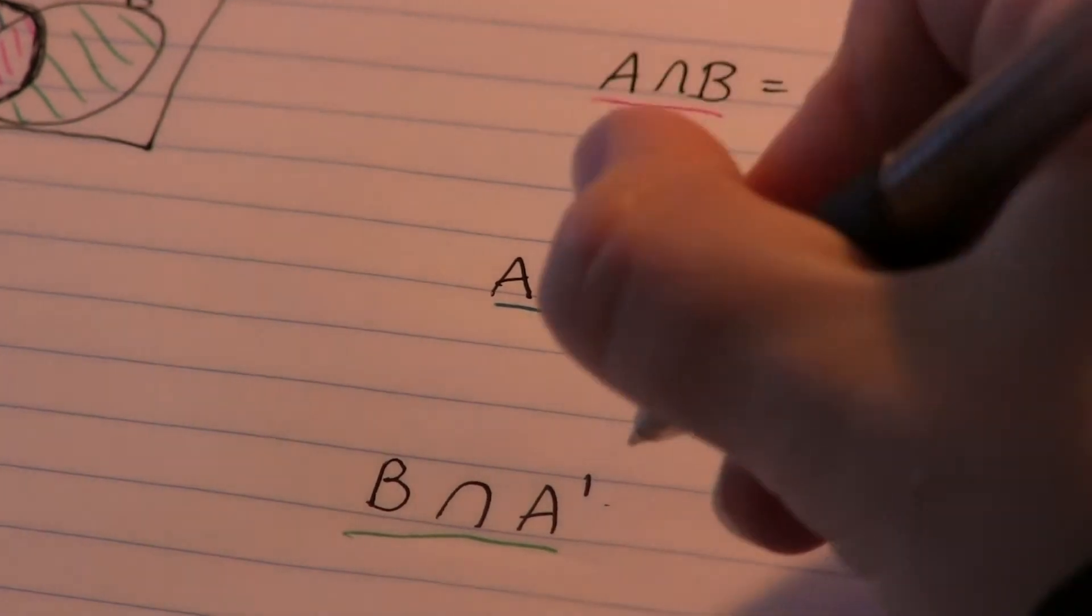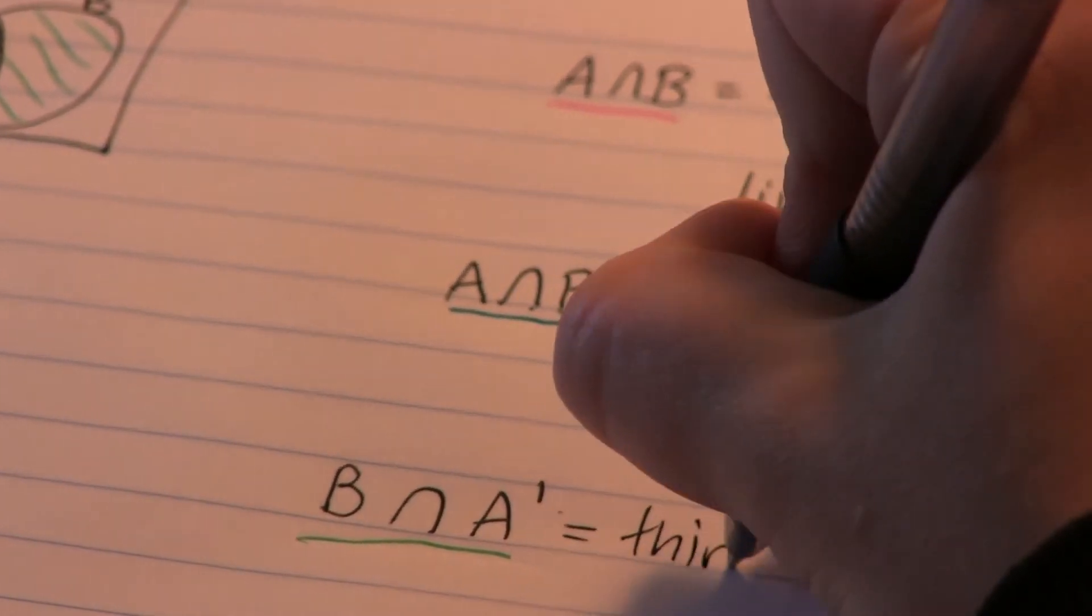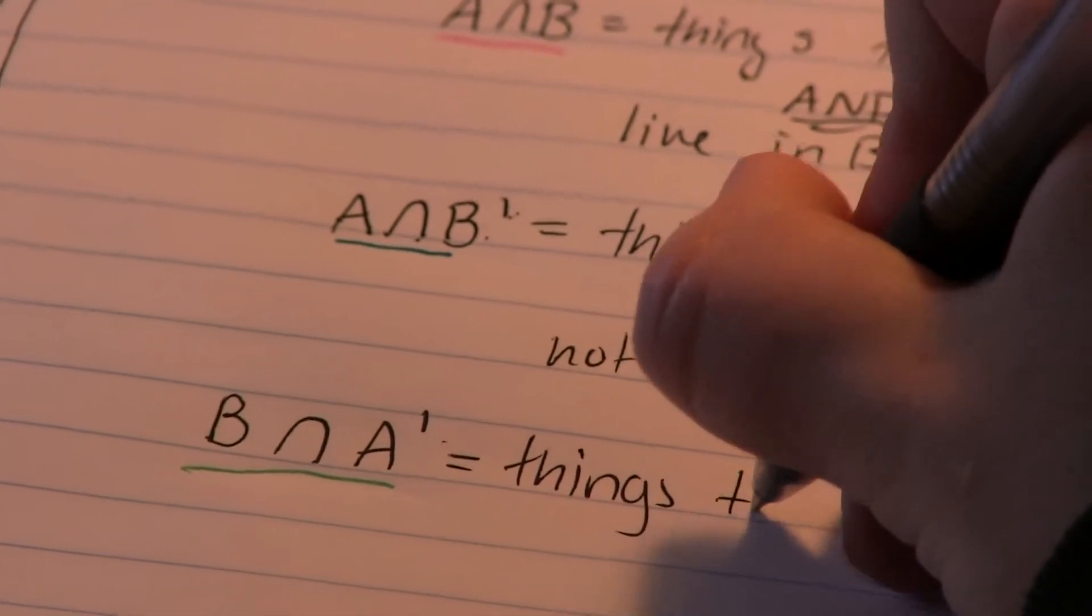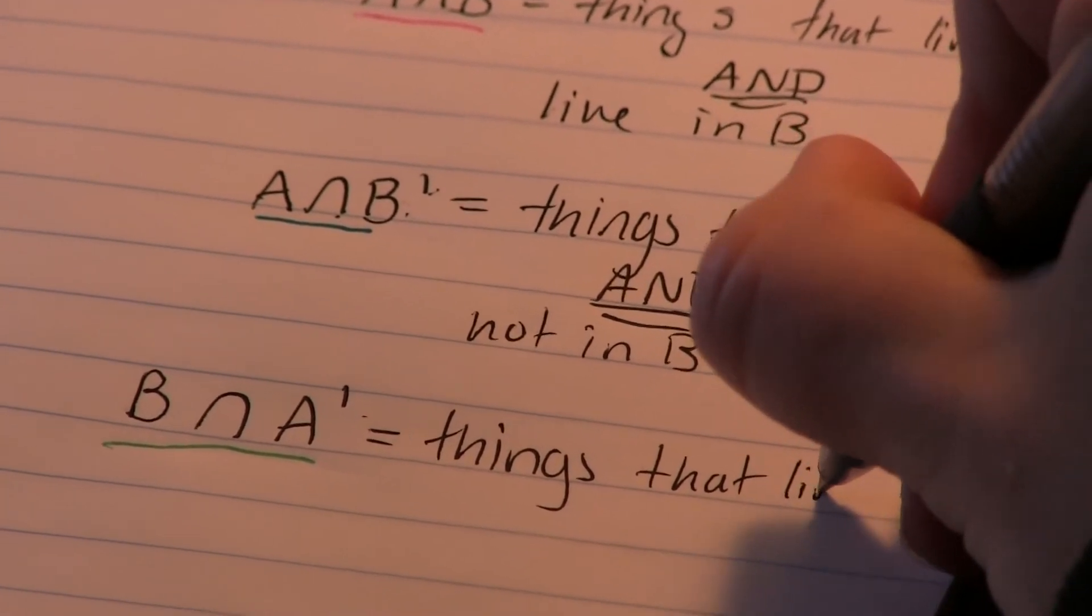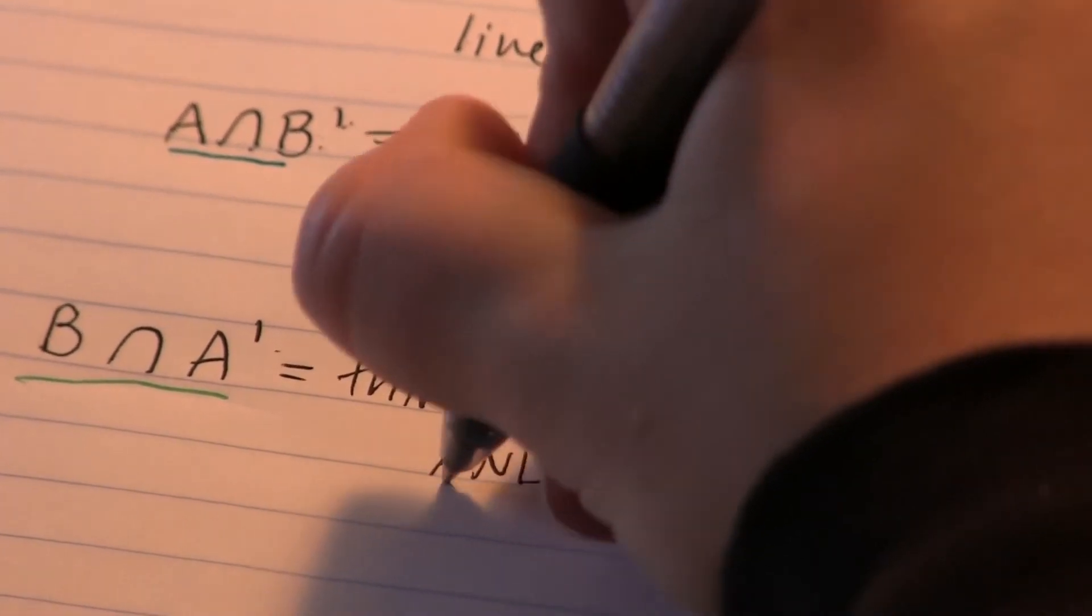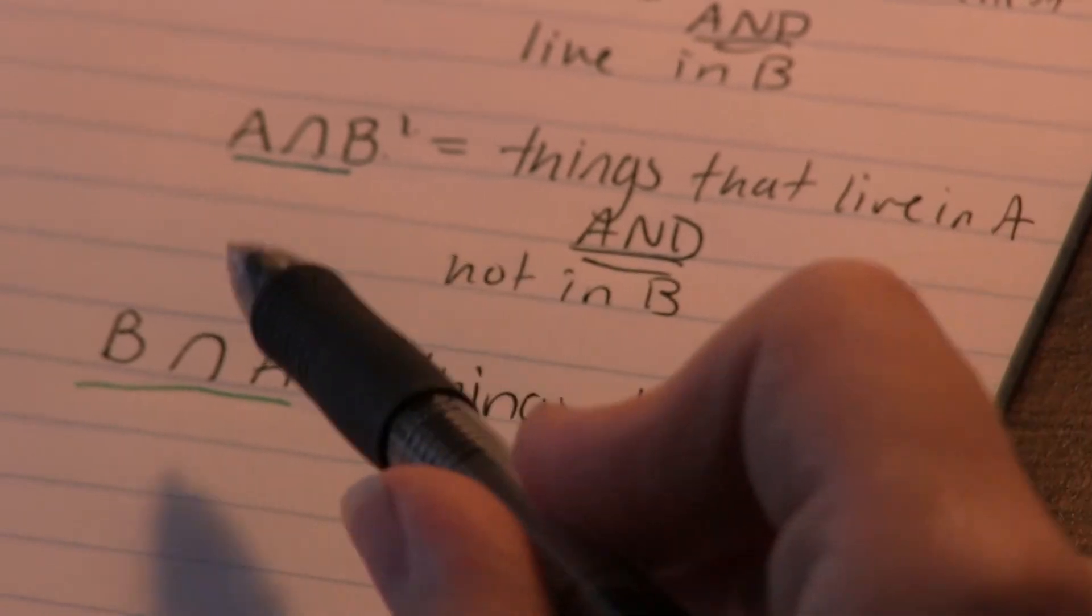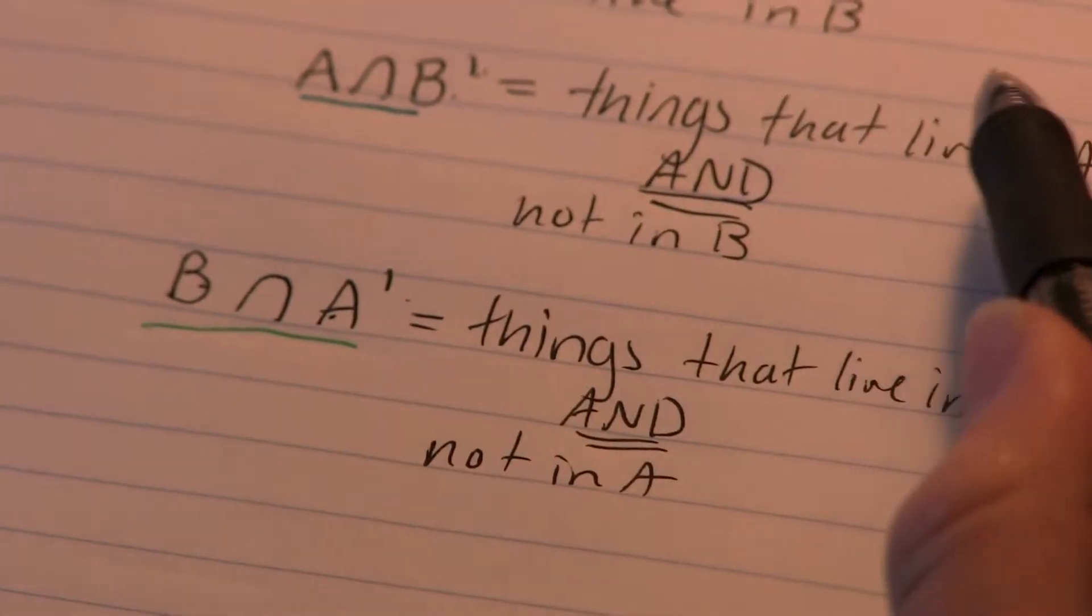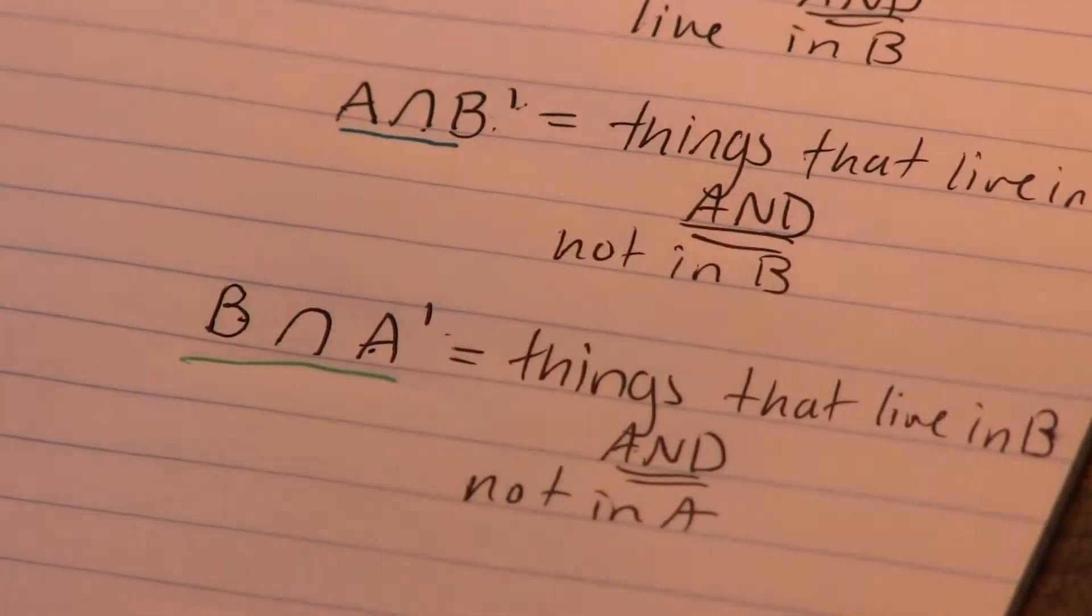I'll write that in English. So things that live in B and, because it's still intersection this whole way through, not in A. And this literally looks like the mirror image of this just with A's and B's switched around. So I buy that.